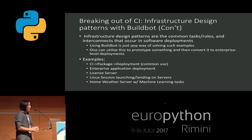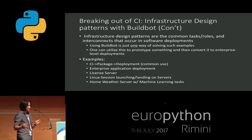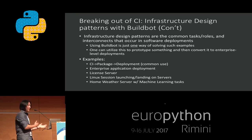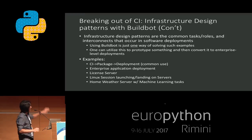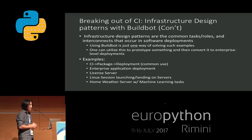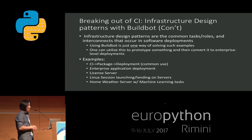The first steps in breaking out of just the CI mindset: the design patterns take the most common tasks, roles, and interconnects that occur in software deployment. You look and ask, what type of roles are always there? BuildBot is just one way of solving this. You can use it to prototype something and then develop something else when you go to production. Some examples of what I've actually implemented: enterprise application deployment and license management have been the two most popular uses that I've made proof of concepts for.